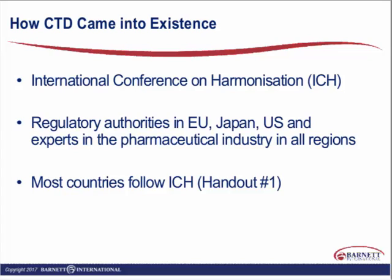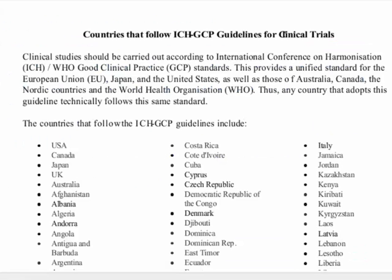A group was formed called the International Conference on Harmonization. It was comprised of regulatory authorities in the EU, Japan, the U.S., and experts all over the globe. Most countries follow ICH. Interestingly enough, Japan still has a very different philosophy in how they present their documents, although they still use the CTD headers and present the same documents, but they do handle them somewhat differently. Right now I believe there are 28 countries that follow ICH-GCP guidelines. This is a list of them, if you're at all interested — these are all the ones that follow it.